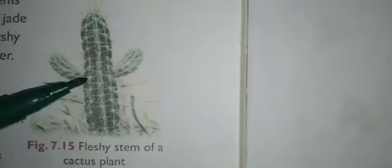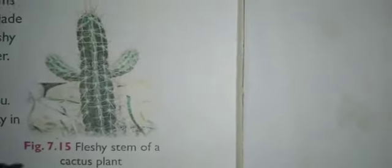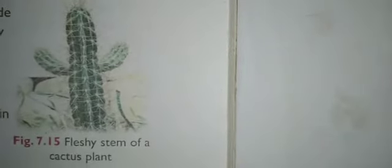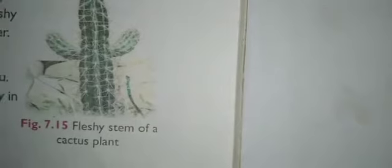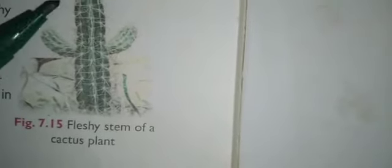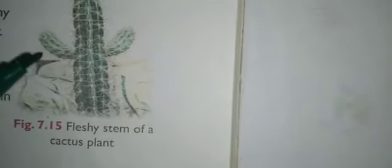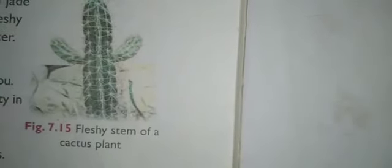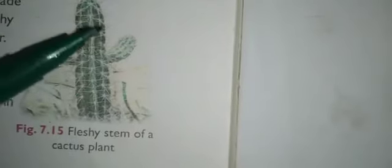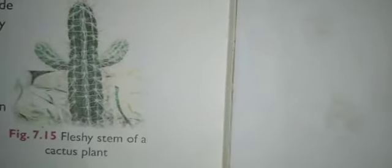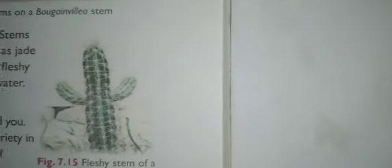You might have observed a cactus — it is very thick and has thorns on it. This is for the storage of water, since cactus grows in areas with very little water. Stems of some plants such as jade plant and cactus are fleshy because they store water. They are modified as very thick stems with thorns so animals do not eat them. I hope all of you have understood this topic. Thank you so much.